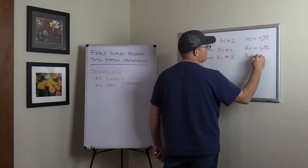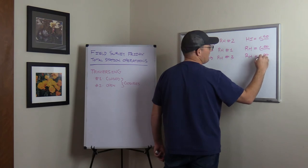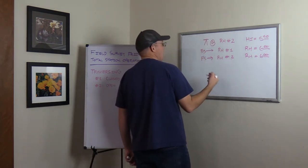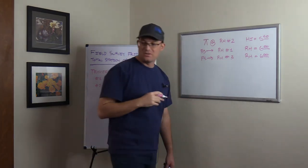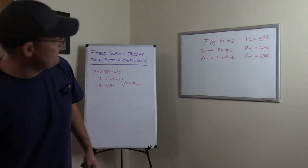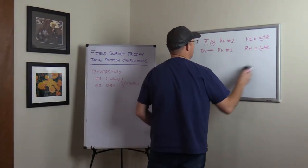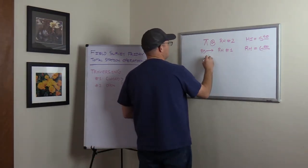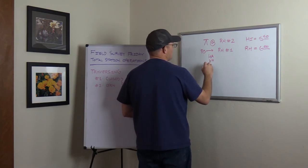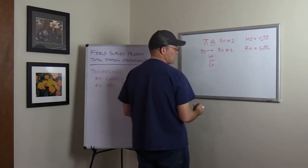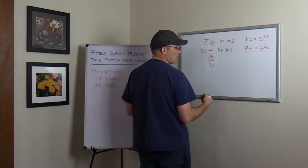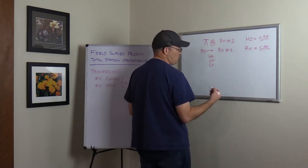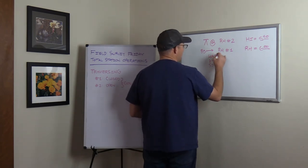Then you got to tell it where you're looking ahead to — foresight RH number three, rod height equals six feet. Now you need to write down the horizontal and the vertical angles. What would be better is when you write down your backsight, then you put your horizontal angle, your vertical angle, and your slope distance. You write those down. Now these get stored in a data collector, but when I was learning to survey, we actually wrote these down in our book because if your data got corrupted or lost — traversing is a lot of work — you wanted to have your stuff written down.